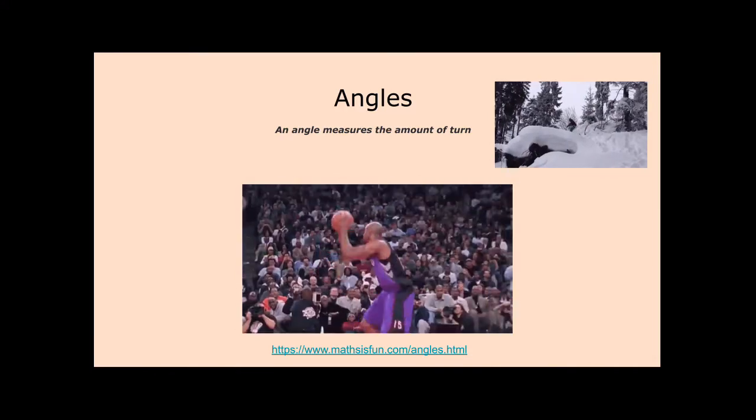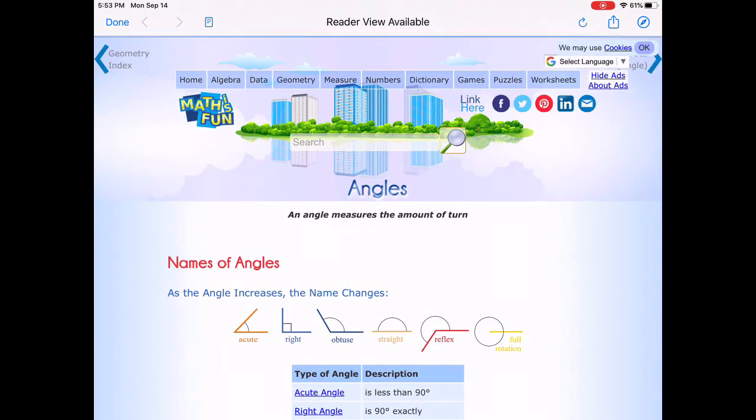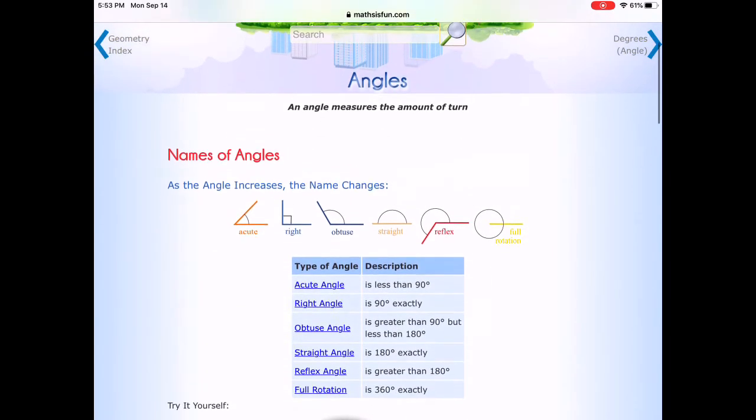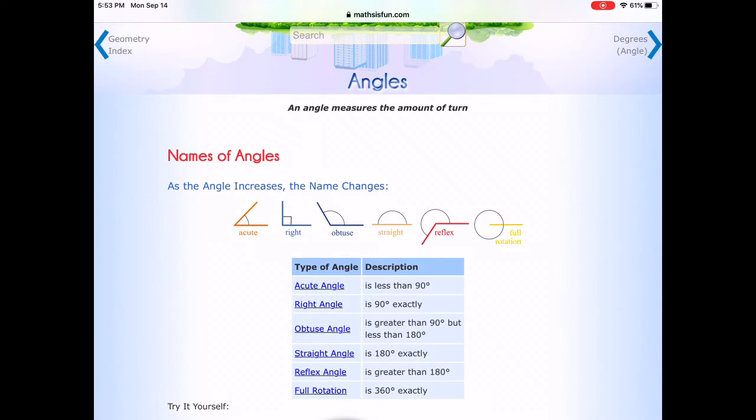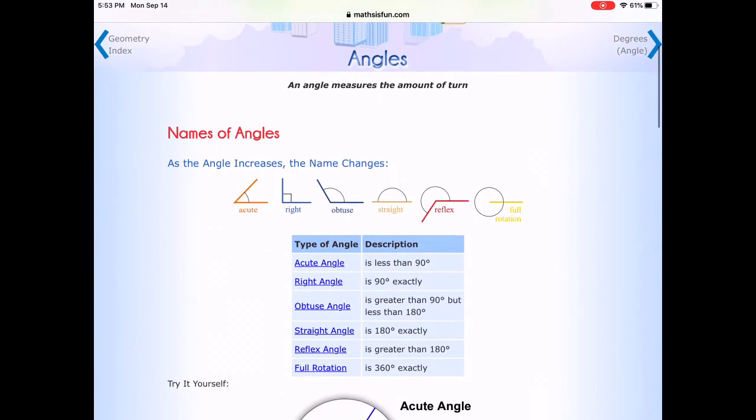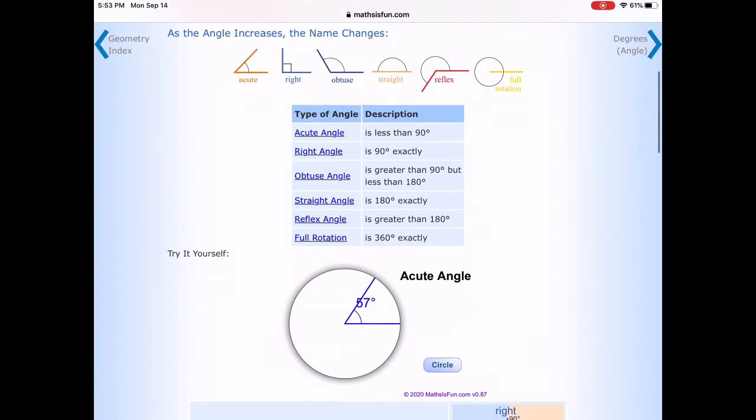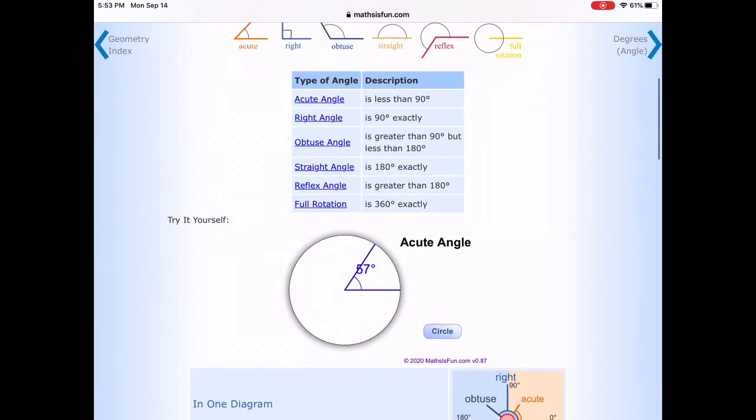But that measurement of degrees is also something that is very useful for engineering and architecture and building things. Because when you want to build things, you want to make sure that things are constructed in the right way. So if you're building a house, you want to make sure that your roof has a slant so the rain drips off of it. And if you're building a house, you want to make sure your floor is flat so that you can walk around safely.